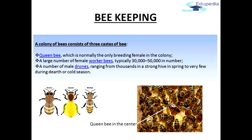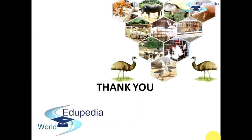So I hope you've understood about the different kinds of animals — the cattle, the poultry birds, the bees, and the fishes — and how these animals are to be taken care of. What kind of food is to be given to these animals at different stages, because only if we take care of these animals will we be able to obtain very healthy products from them. We have to take every possible step in order to keep these animals healthy and safe, and that's why these small precautions that we just discussed are very important. Thank you for watching Edupedia World videos.